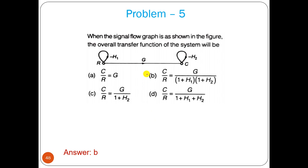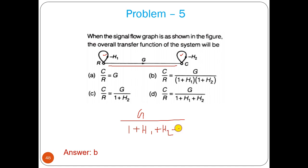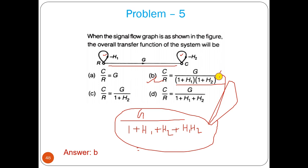This is a simple GATE problem: find C/R. There is one forward path with gain G. Two feedback loops H1 and H2 are non-touching with each other. Delta = 1 + H1 + H2 + H1*H2 = (1+H1)(1+H2). Delta1 = 1. So C/R = G / [(1+H1)(1+H2)], which corresponds to answer B.